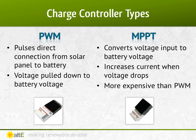PWM charge controllers operate by making a direct connection from the solar array to the battery bank. During bulk charging, when there's a continuous connection from the array to the battery bank, the array output voltage is pulled down to match the battery voltage. As the battery charges, the voltage of the battery rises, so the voltage output of the solar panel rises as well, using more of the solar power as it charges.